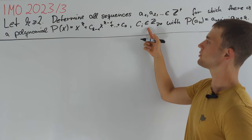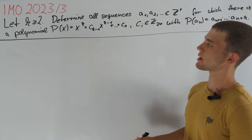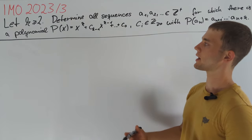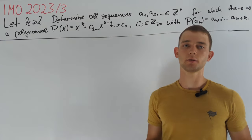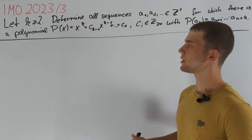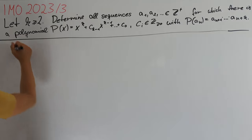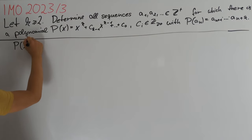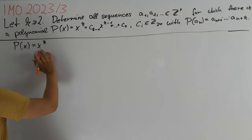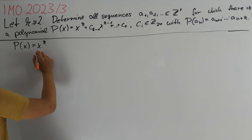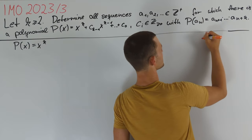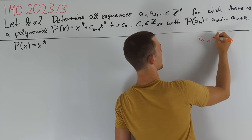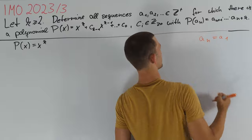The condition that coefficients are non-negative tells us that p(x) is greater than or equal to x^k for any positive integer x. We will later want to use a strict inequality, so we first consider the case p(x) equals x^k. We immediately see that this polynomial is a valid choice for any constant sequence a_n, so we can write down as solutions: the constant sequences a_n equal to a_1.